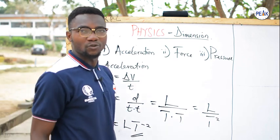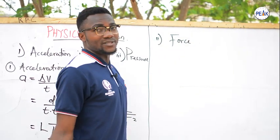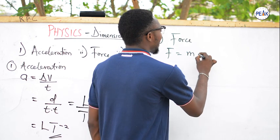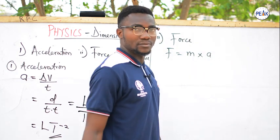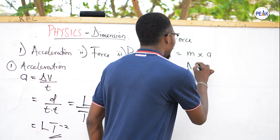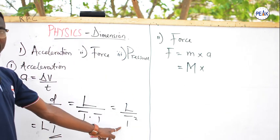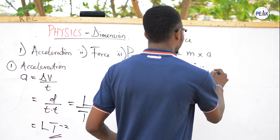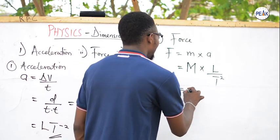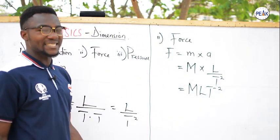Now let us find the dimension of force. Force equals mass times acceleration. The dimension for mass is capital M, and we already found the dimension of acceleration to be L over T squared. So we have M times L over T squared. Written linearly, the dimension of force is MLT⁻².